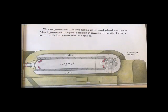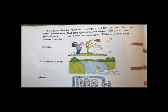These generators have huge coils and giant magnets. Most generators spin a magnet inside the coils. Others spin coils between two magnets. The muscles in your arms supplied the power for your little generator. But big generators need much more power to spin their coils or magnets.